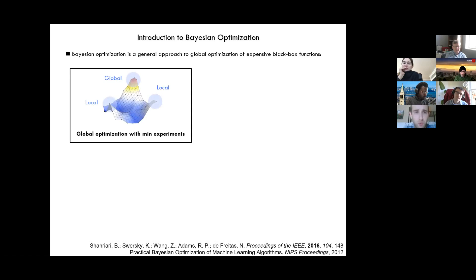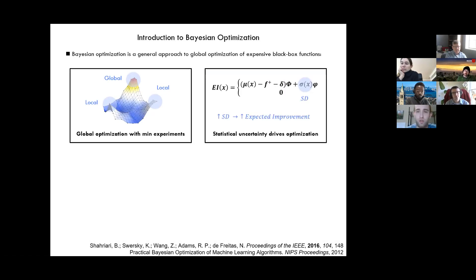So Bayesian optimization is a global optimization algorithm, which means that we're trying to infer the position of a global optimum in the presence of potentially many locally optimal solutions. And it does this in a way that uses statistical uncertainty to drive optimization as well as information about experiments that have already been run.